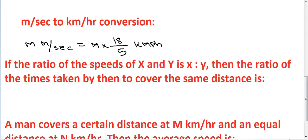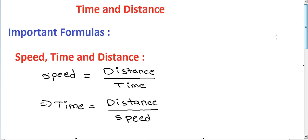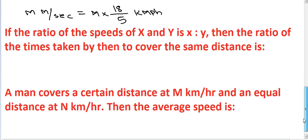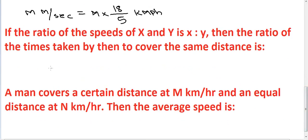Next formula: if the ratio of the speeds of x and y is x to y, then the ratio of the times taken by them to cover the same distance is inversely proportional — that is, 1/x to 1/y, which equals y to x. Speed is always inversely proportional to time.